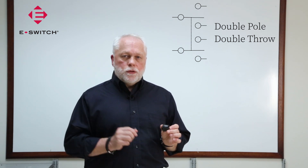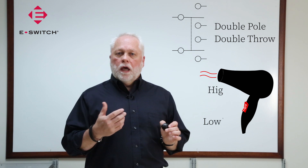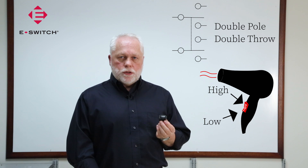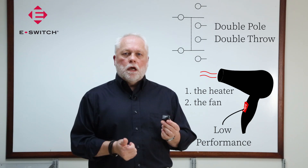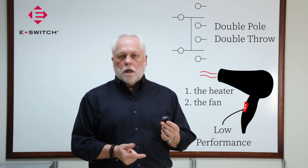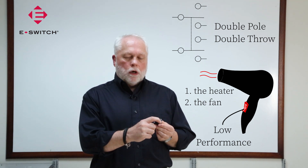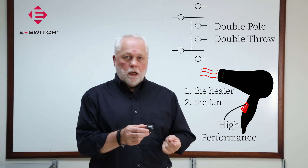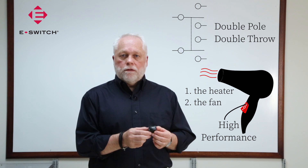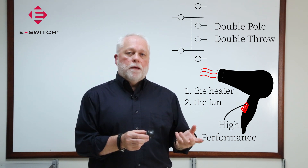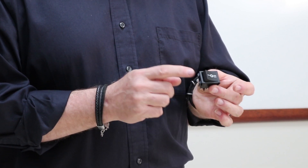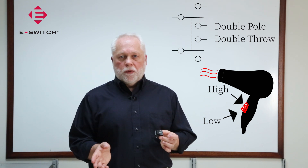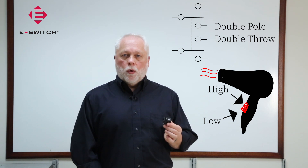The fourth most common is a double pole, double throw switch. Again, let's assume we have the same hair dryer, but now it has a high and a low setting. The switch I have is a three-position rocker. In the center, the hair dryer is off. As I actuate the switch to the far right, it turns on the heating element and closes the circuit for the fan in low performance mode. As I actuate the switch all the way to the far left, it closes the circuit for the heating element as well as the circuit for the fan, putting the hair dryer into high performance mode. So by definition, I'm closing two poles at the same time — this is a double pole switch — and I have two positions where those circuits are closed: low and high performance mode. That is why we call this a double pole, double throw device.